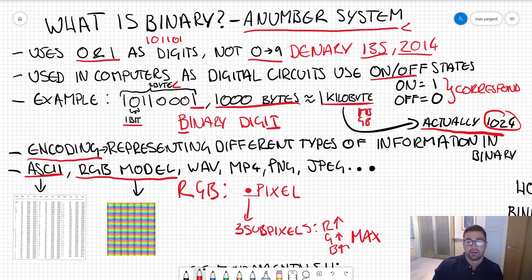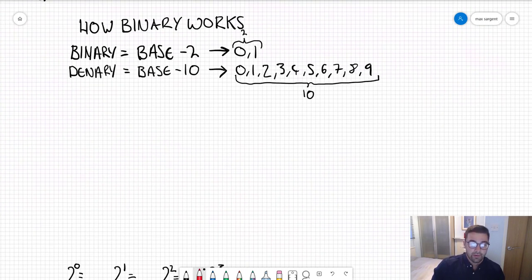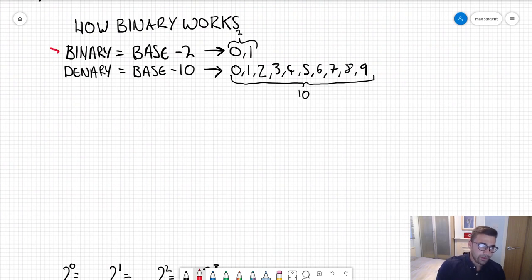So how does binary work? It's really straightforward. Here we've got binary, here we've got denary. These are the different digits that we can use in binary: zero and one. We've got zero through to nine here for denary. We call this number the base or sometimes the radix of a number system.